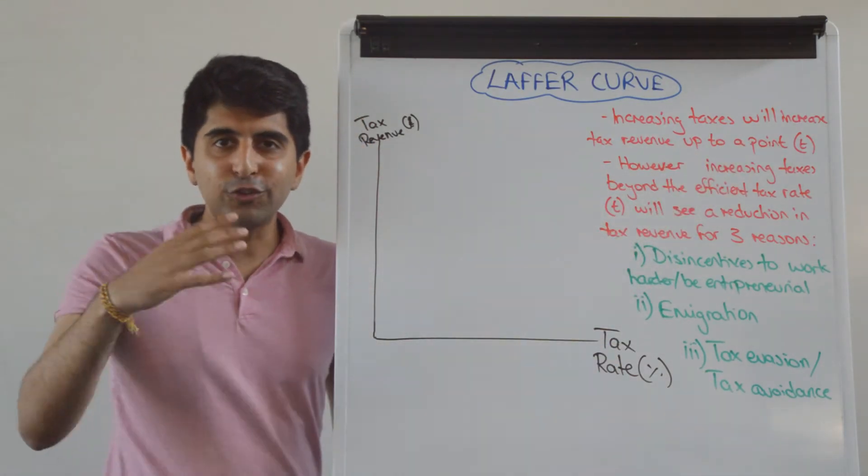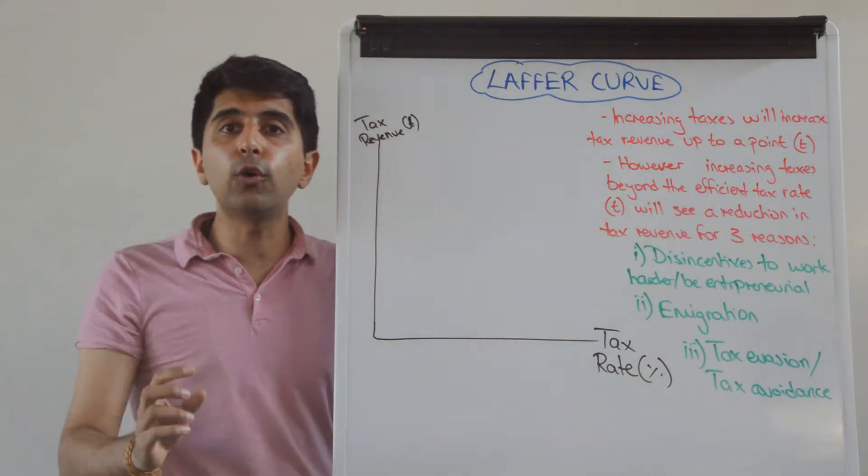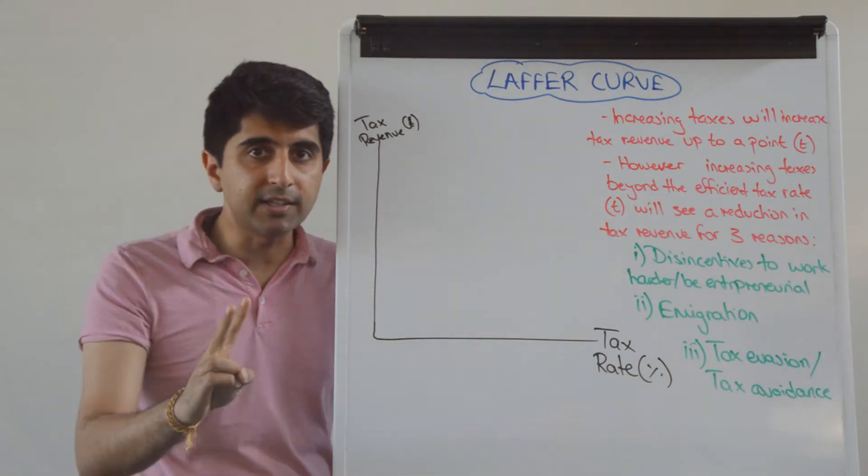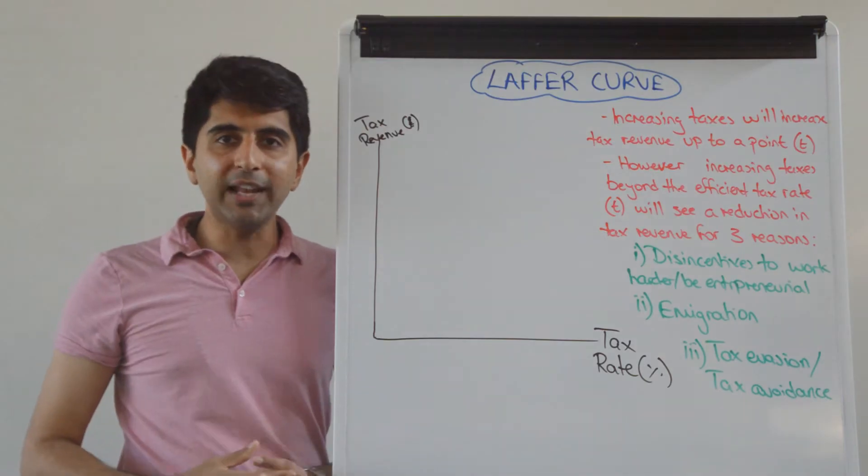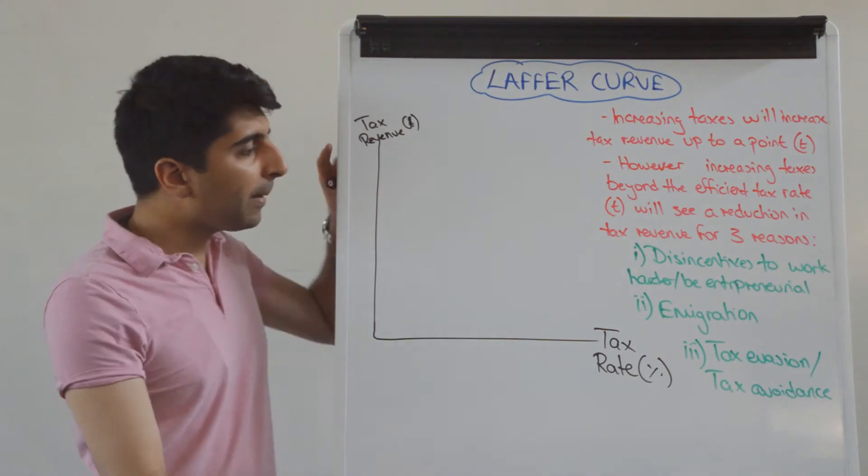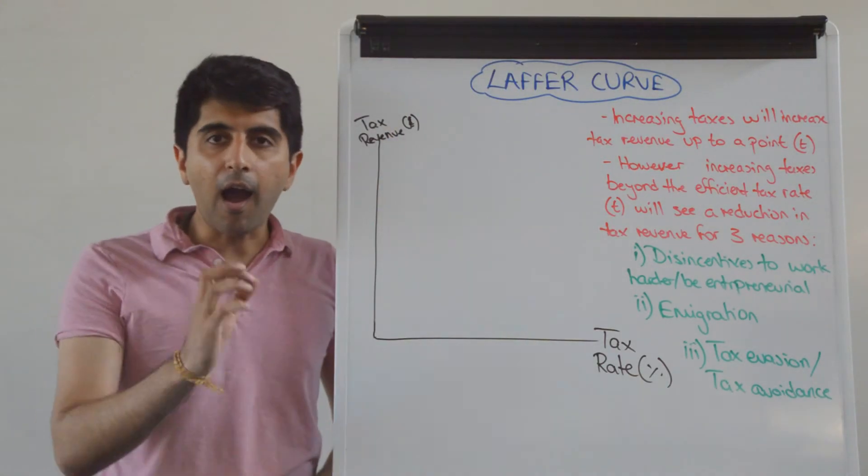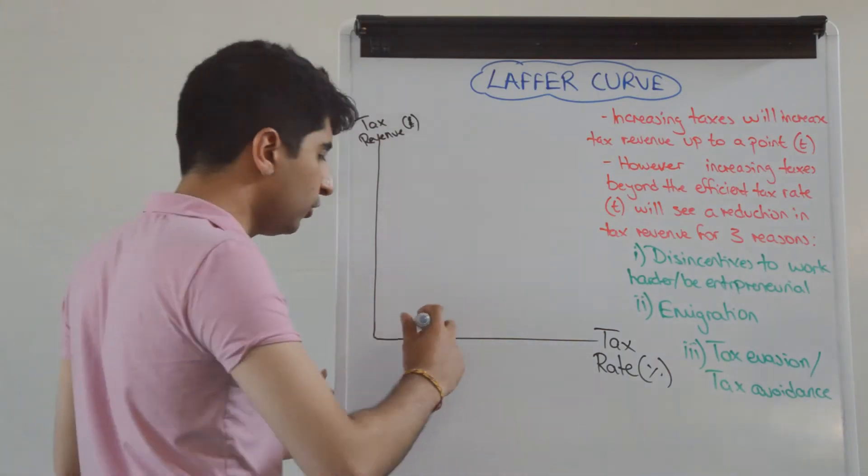Arthur Laffer said that as soon as taxes start to increase beyond a point, beyond what he called an efficient tax rate, the amount of tax revenue collected by the government will start to decrease. So by mapping the relationship between tax rates and tax revenue collected, Arthur Laffer came to this conclusion.